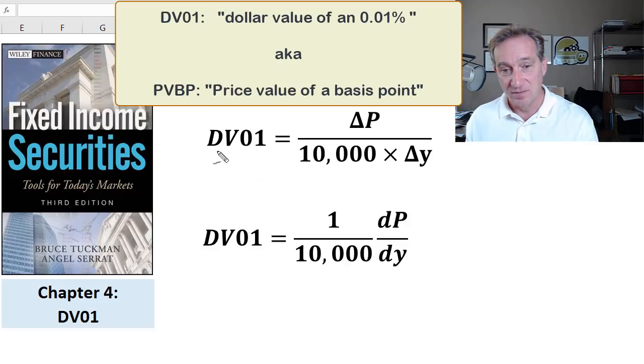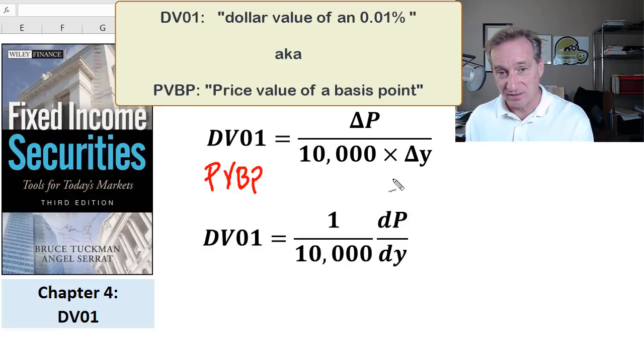starting with what I think is the most useful single factor risk measure, the DV01. It's also known by a name that I think is more descriptive, price value of a basis point. I'll show you why I think that's a more descriptive term, although we tend to use DV01 here.